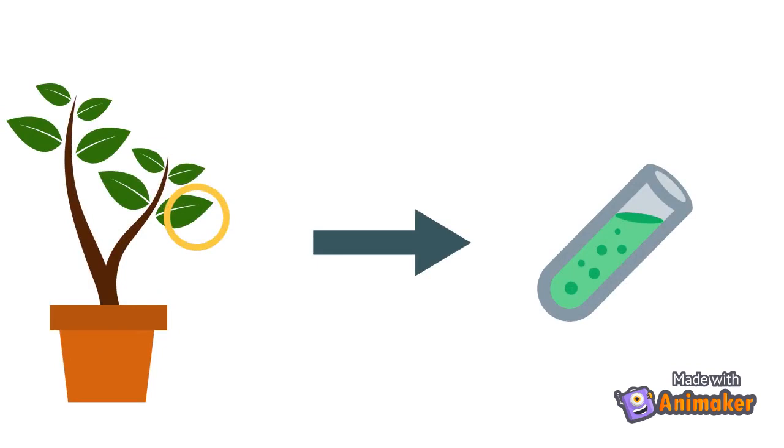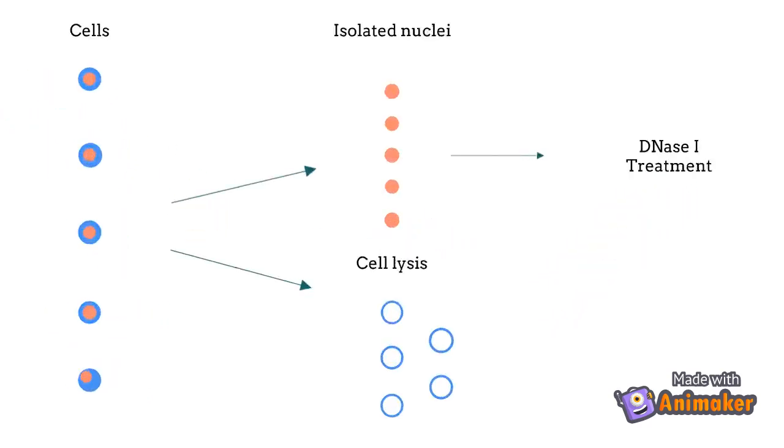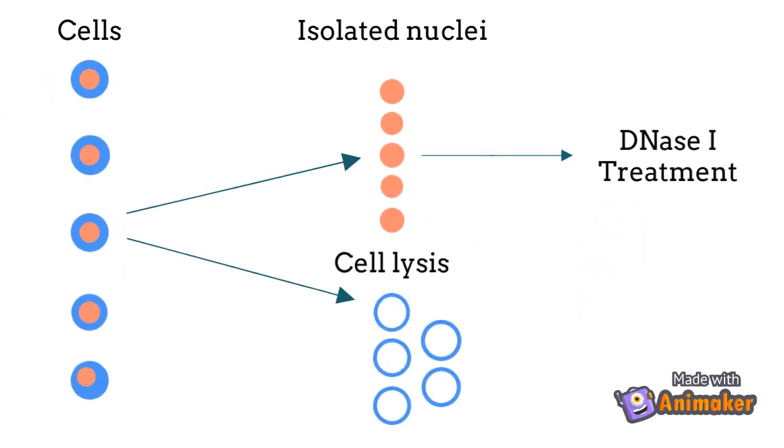Before we get to see how those regulatory elements can be identified, we need to conduct a DNA extraction from an organism of interest, a common house plant. Here, we will grind and lyse plant cells to isolate the nuclei.